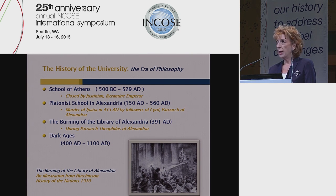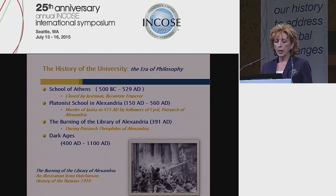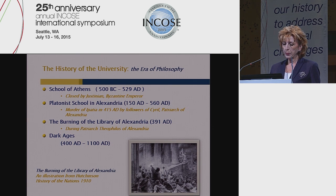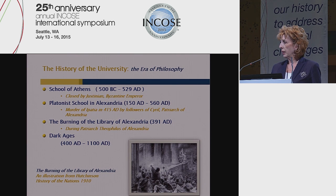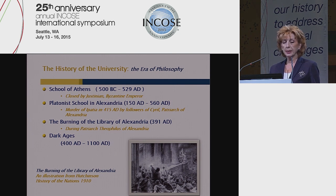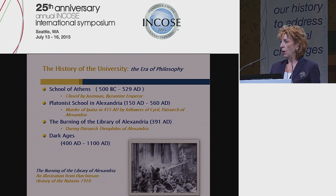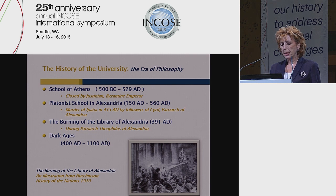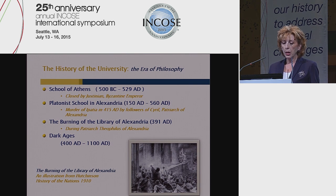It was closed in 529 AD by Justinian, a Byzantine emperor, who decided that school was a leftover of paganism. Plato's school in Alexandria was another famous one, from 150 AD until 560 AD. It practically closed down after the murder of Hypatia, the first woman philosopher and director of that school, who primarily dealt with mathematics. She was killed by followers of Cyril, Patriarch of Alexandria, and then the library of Alexandria was burned in 391.